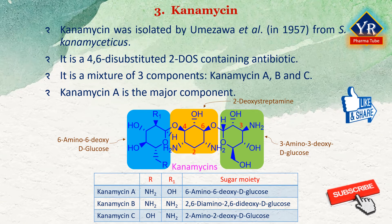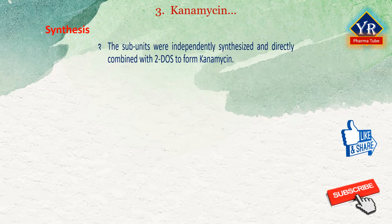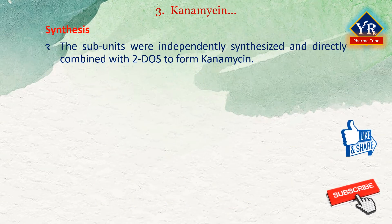Structurally, the kanamycins resemble neomycins and paromomycins. However, the kanamycins do not contain the D-ribose molecule that is present in neomycins and paromomycins. This structural difference is possibly related to the lower toxicity observed with kanamycins. The kanosamine fragment linked glycosidically to the sixth position of deoxystreptamine is 3-amino-3-deoxy-D-glucose in all three kanamycins. Kanamycin A contains 6-amino-6-deoxy-D-glucose, kanamycin B contains 2,6-diamino-2,6-dideoxy-D-glucose, and kanamycin C contains 2-amino-2-deoxy-D-glucose. The subunits of kanamycin were independently synthesized and directly combined with 2-deoxystreptamine to form kanamycin.